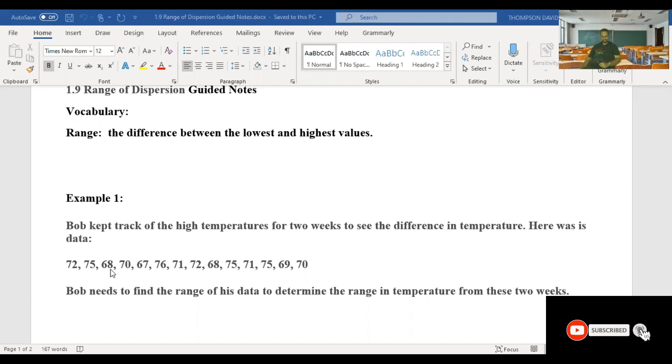72, 75, 68, 70, 67, 76, 71, 72, 68, 75, 71, 75, 69, and 70. Bob needs to find the range of his data to determine the range of temperature for these two weeks. So first step, we need to find the largest number.